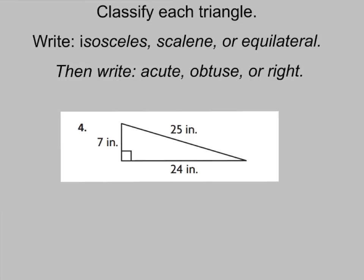How do you feel about question number four? Think about the different terms I taught you, and go ahead and press pause and write what you think it is. For question number four, you should have said that it's a right scalene triangle, because it has one right angle and all three sides are different lengths.